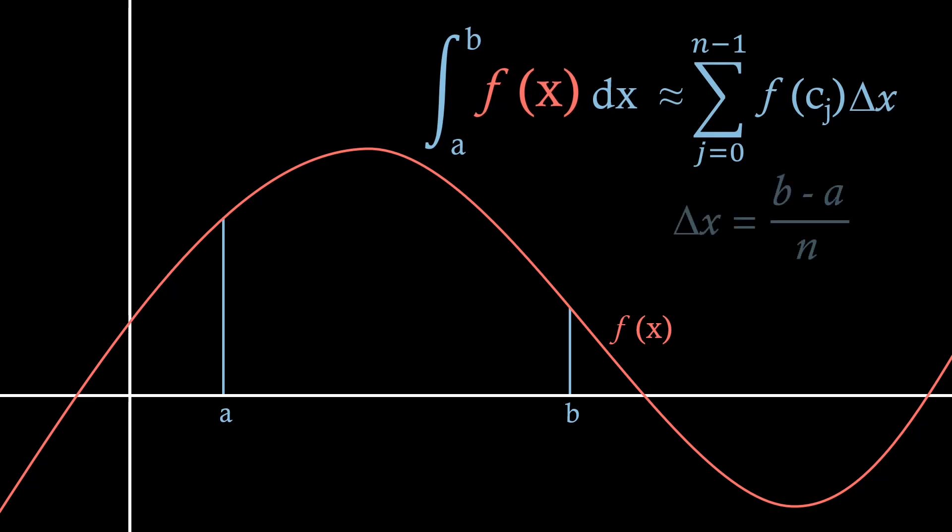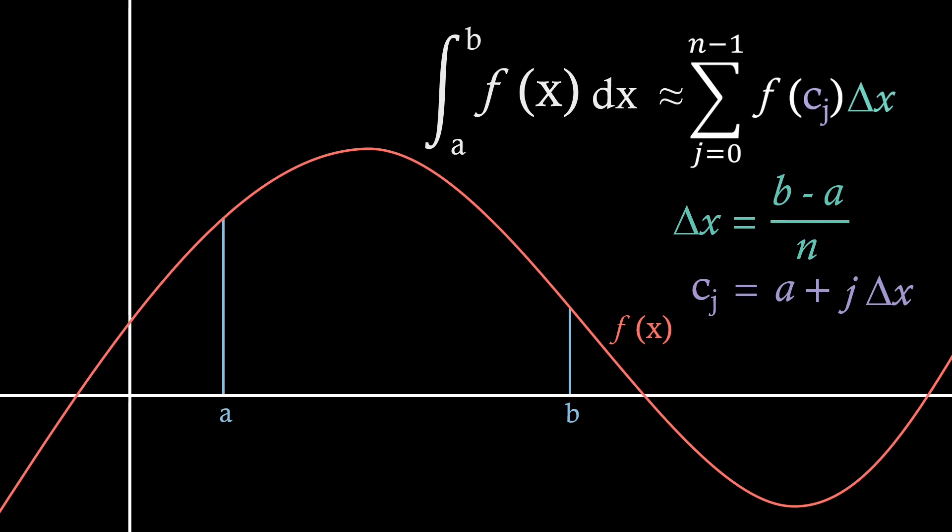So if we look at the approximate definition that the integral of f of x on the range a to b is the sum from j equals 0 to n minus 1 of f of cj times delta x, where delta x is just the distance between a and b over n, and cj is just the lower value of our range plus j times delta x. It's important to note that this approximation here is actually a left-hand Riemann sum, but we'll get onto that in a minute.